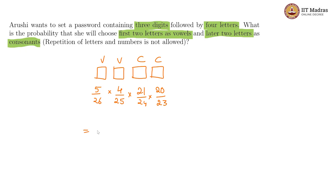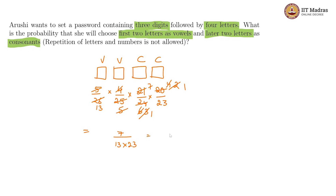So this calculation is what we are supposed to do. If we cancel out: 4 sixes is 24, and 5 fives is 25, so 5 fours is 20. After cancellation we get 7 by 13 into 23, which is equal to 7 by 299, which is roughly equal to 0.02341. So this is the probability.